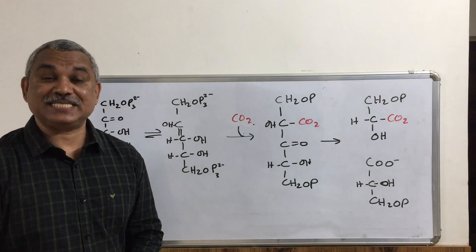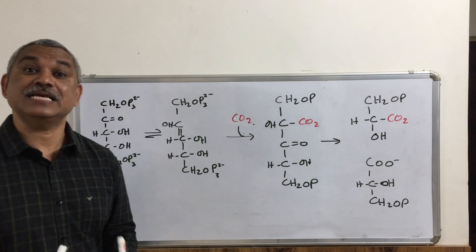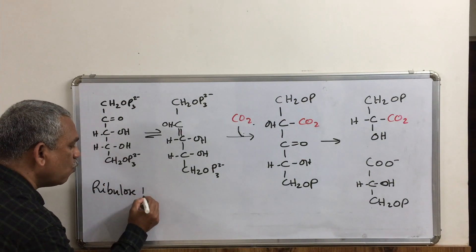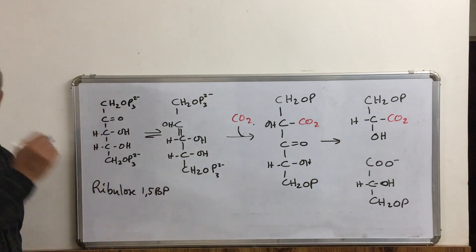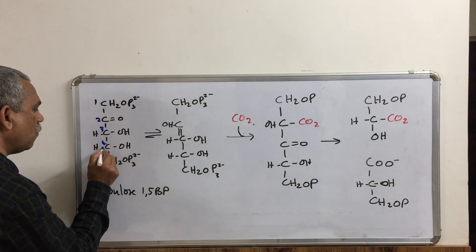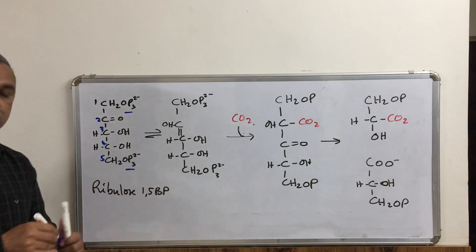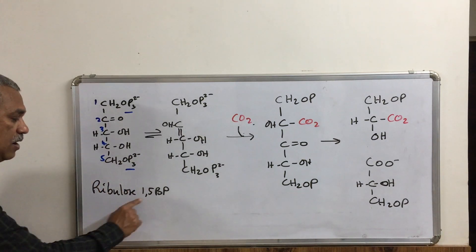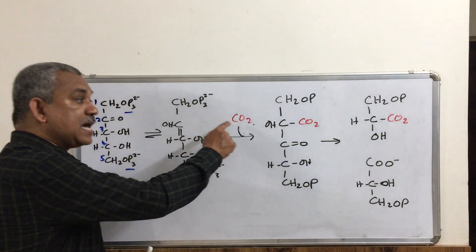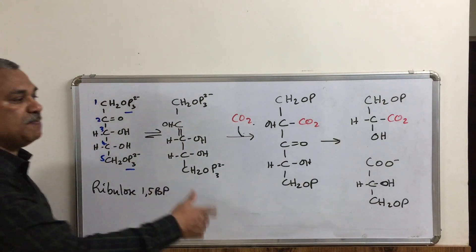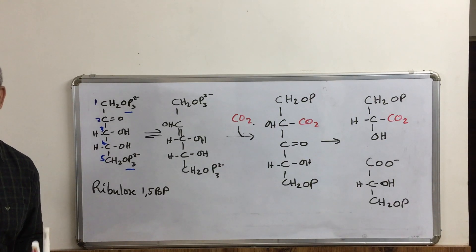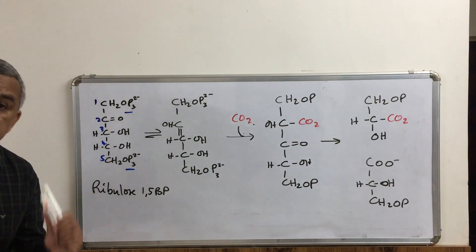Let us understand how the carboxylation reaction is carried out. This is the structure of ribulose 1,5-bisphosphate — carbon atoms numbered 1, 2, 3, 4, and 5 with two phosphate groups — so it is a ketose, 1,5-bisphosphate. A carbon dioxide is attached to ribulose 1,5-bisphosphate to make two three-carbon compounds. This attachment is carried out by the Rubisco enzyme, which is initially an inactive enzyme that must first be activated.